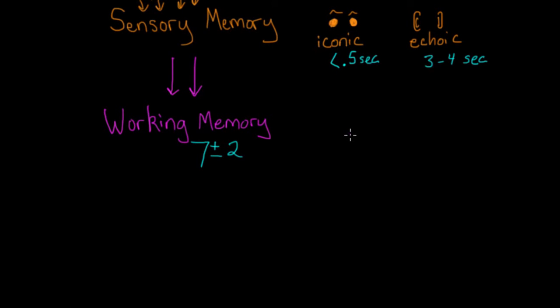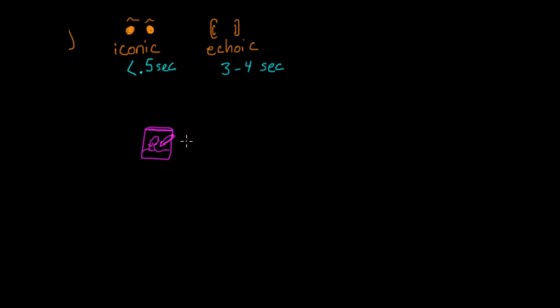And just like sensory memory has different components for different types of input, working memory has different components to process those distinct types of input. Visual and spatial information, like pictures and maps, are processed in the aptly named visuospatial sketch pad. While verbal information, meaning words and numbers, are processed in the phonological loop. Again, think of repeating a phone number to yourself just long enough to type it in. That's using your phonological loop. Be careful here, though. Verbal information means any words and numbers. So words and numbers you heard that came from echoic memory and words and numbers you saw that came from iconic memory. So we've got a little bit of mix and match here.